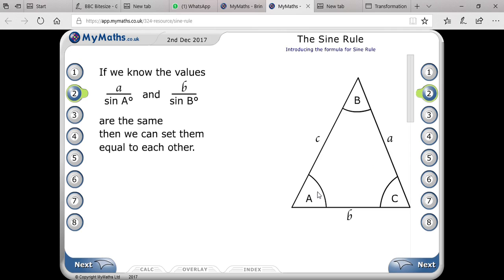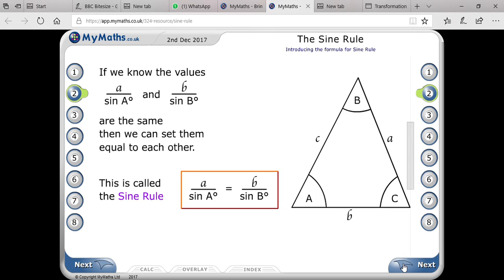That means a is opposite angle A, b is opposite angle B, c is opposite angle C. Fundamentally, this is known as the sine rule because you are equating sine ratios. That's why it is your sine rule.